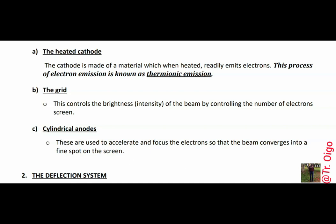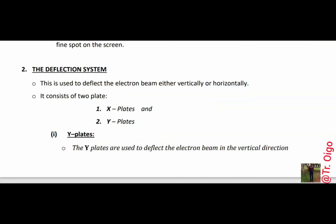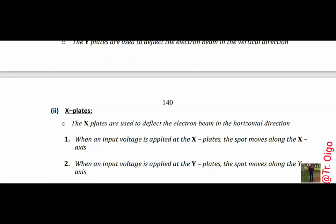The second part is the deflection system. Under the deflection system, there are two sets of plates — they can deflect the beam either vertically or horizontally. It consists of the x-plates and the y-plates. The y-plates are used to deflect the electron beam in the vertical direction — that is, up and down. The x-plates are used to deflect the electrons horizontally — that is, left and right.